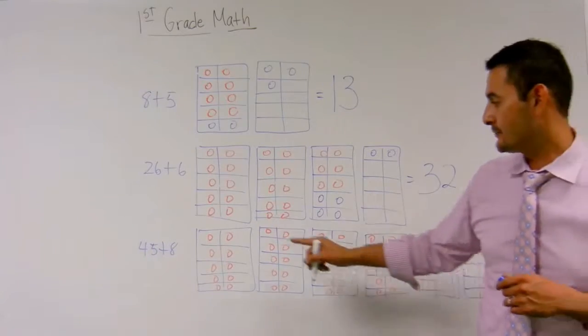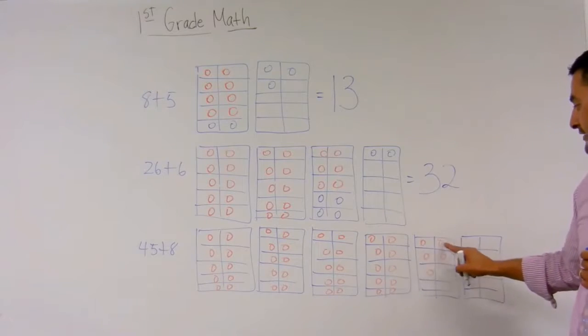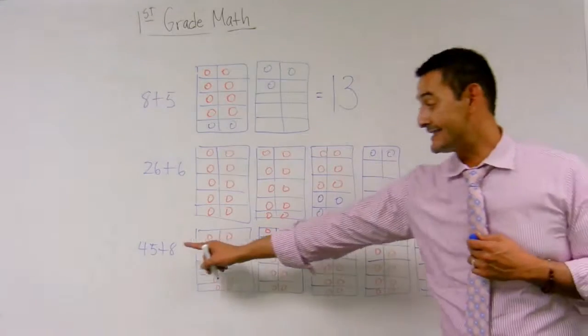Now let's take a look at this problem here. Forty-five plus eight. Ten, twenty, thirty, forty, forty-one, forty-two, forty-three, forty-four, forty-five. Plus eight.